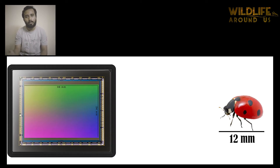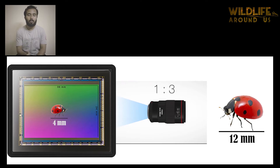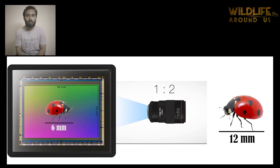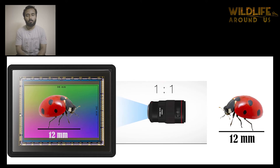With a lens having a magnification ratio of 1:5, the image projected on the 36×24 full frame sensor is 2.6 millimeters. With a lens at 1:3, the image on the sensor will be 4 millimeters. With a lens at 1:2, the image on the sensor is 6 millimeters. Now, with a lens at 1:1, the image projected on the sensor is 12 millimeters — the same as the actual dimension of the subject.